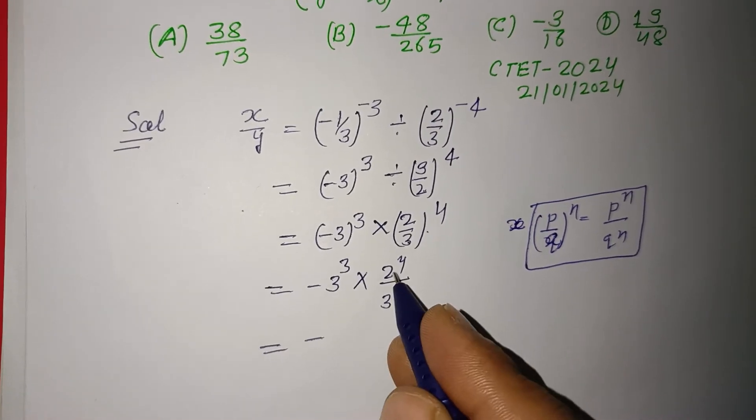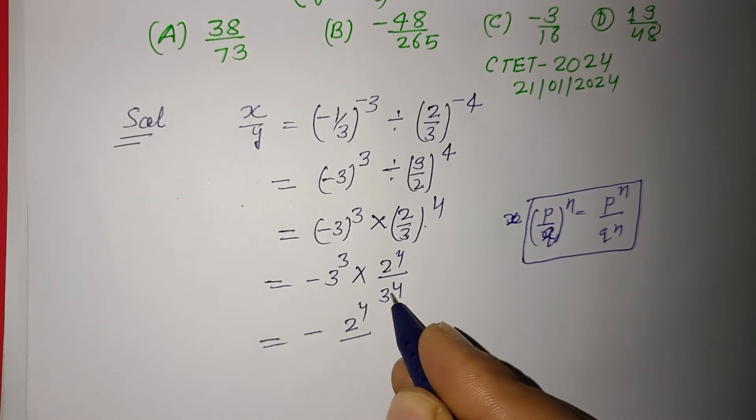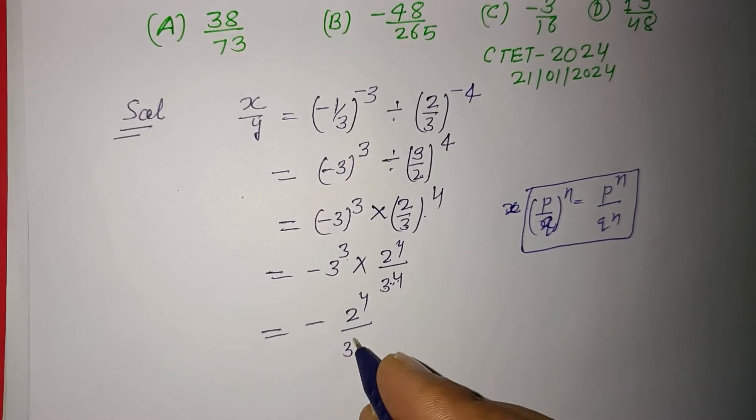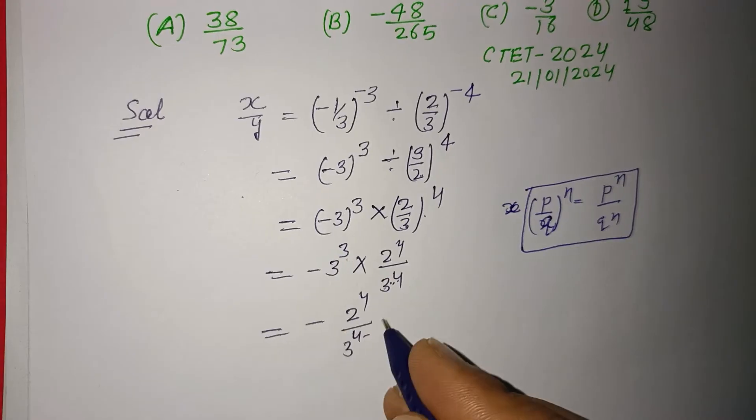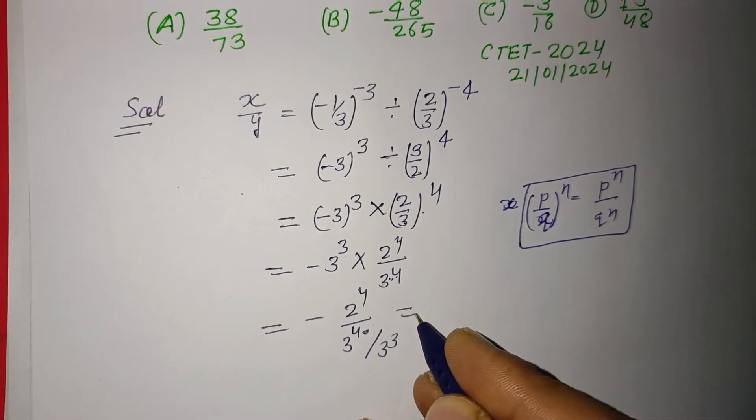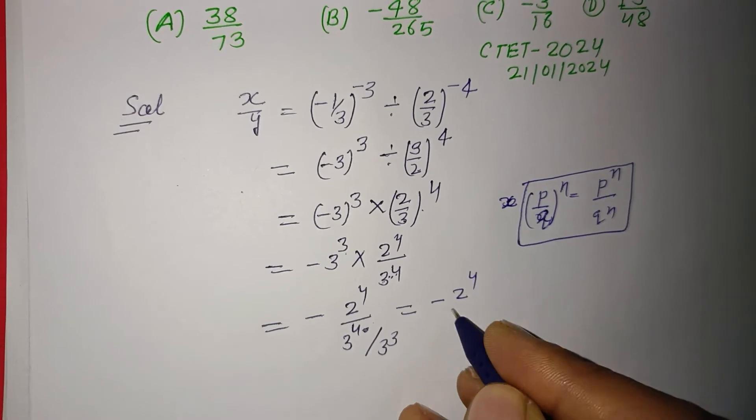Now -2^4, and this written as 3^4, -3^3 we can write it as 3^3 here. So -2^4 here, 3^4 minus 3.